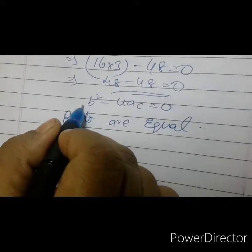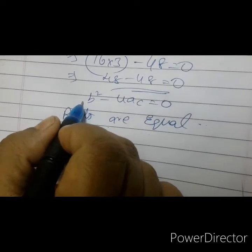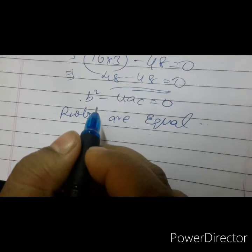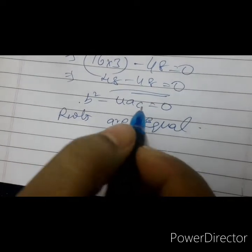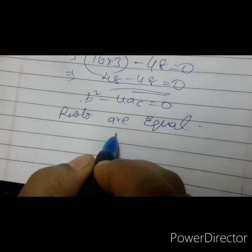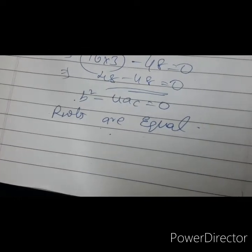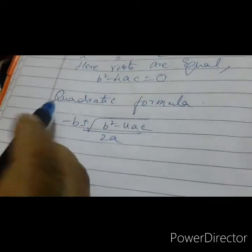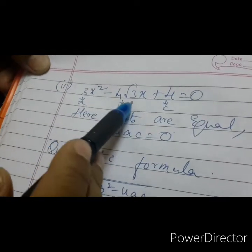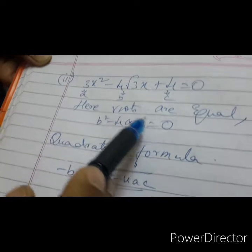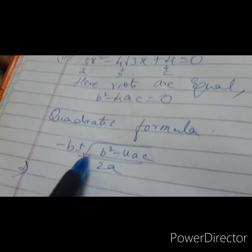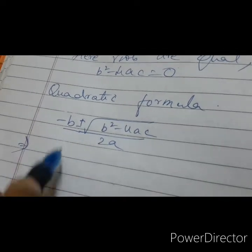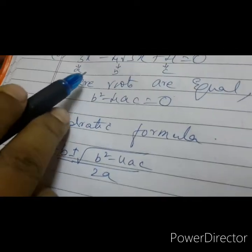Now, since the roots are equal, we have to substitute in the quadratic formula: x equals minus b plus or minus under root b squared minus 4ac, divided by 2a. We have to find out the roots. The equation is 3x squared minus 4 root 3 x plus 4 equals to 0. Now substitute the values using the quadratic formula.